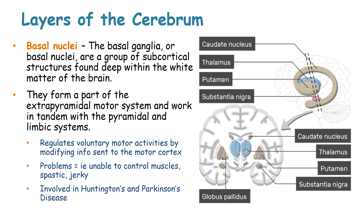The basal nuclei involves the caudate nucleus, the thalamus, the putamen and substantia nigra, and the globus pallidus. This basal nuclei regulates voluntary motor activities by modifying the information from the motor cortex. When this area has problems, one may not be able to control the muscles, and all movement control is spastic and jerky. This is evident in diseases such as Huntington's chorea and Parkinson's disease.